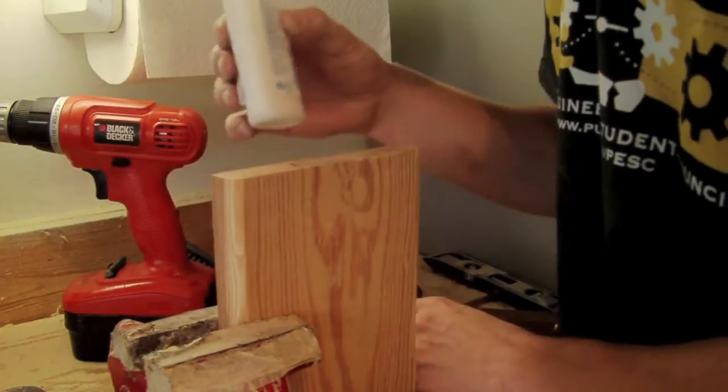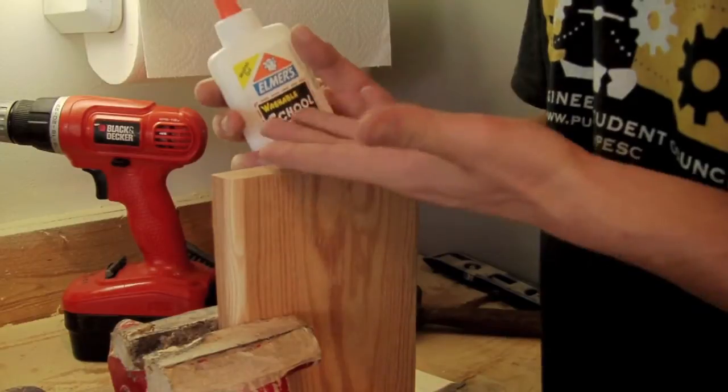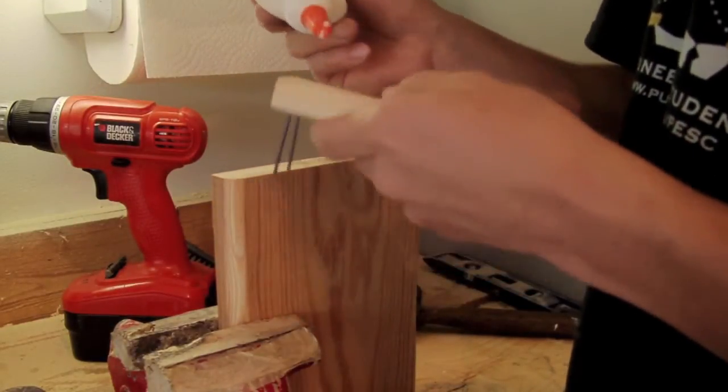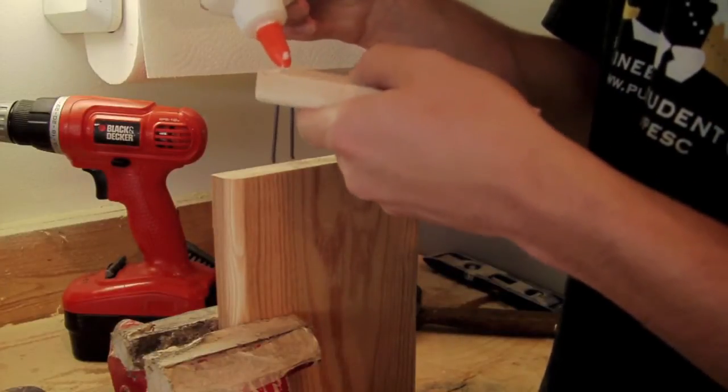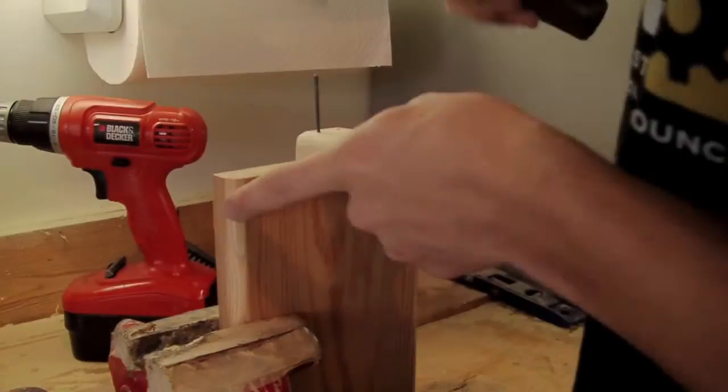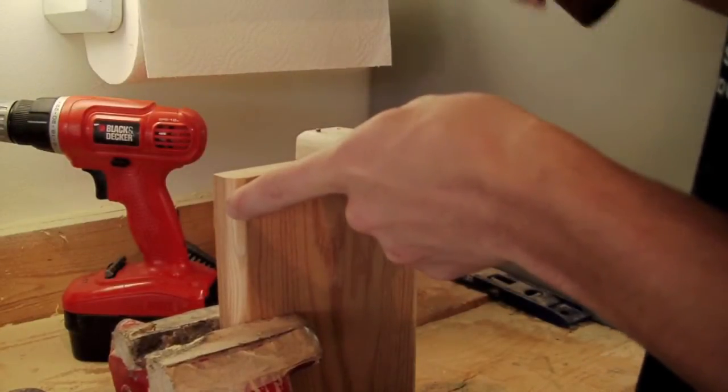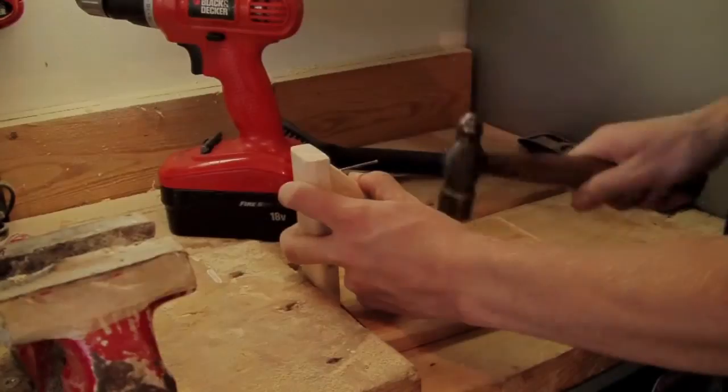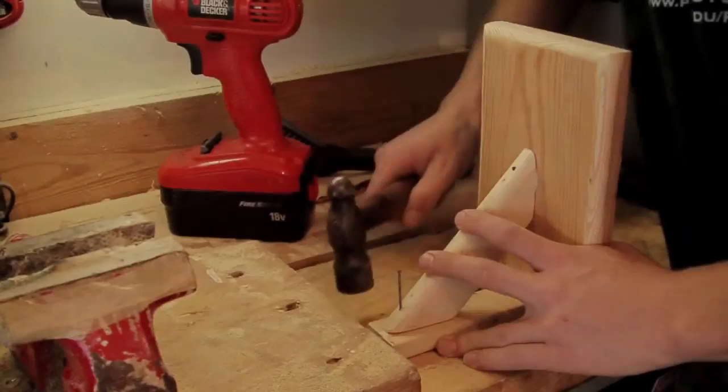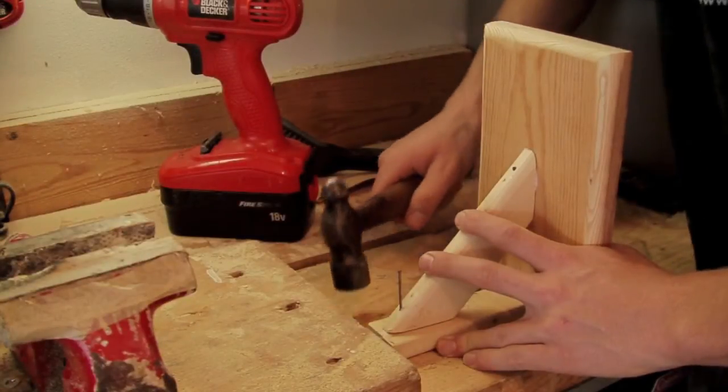Now to glue it, you can use any type of glue you want. I'm choosing to use Elmer's glue because it's cheap and everybody has it. Just put a conservative amount on there, you don't have to put a whole lot. Before we put the second nail in, go ahead and do the other side.